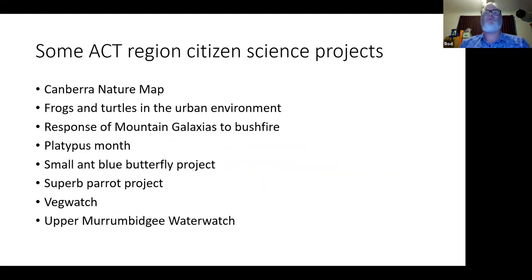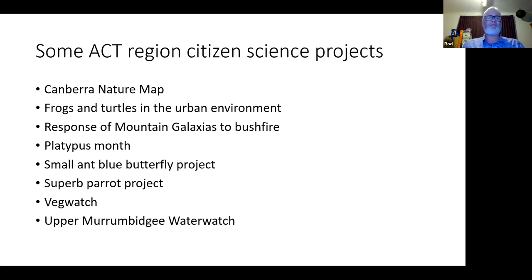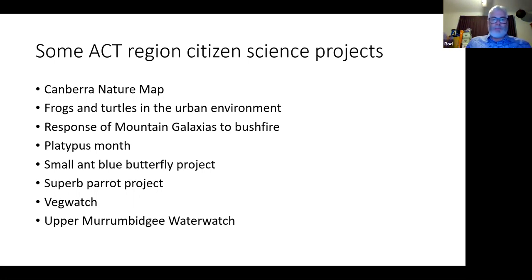I wanted to mention some of the projects I've been involved with so far in my relatively short time in the role. All these projects have people who developed and manage them and know a lot more about them than I do. The main projects include Canberra Nature Map — a super valuable project that maps the presence and distribution of lots of flora and fauna in the ACT region, providing valuable data on distributions and a whole lot more.